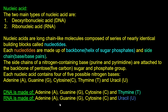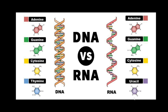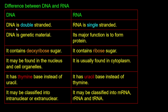This is the difference between DNA and RNA. DNA is double stranded; RNA is single stranded. DNA contains thymine; RNA contains uracil instead. DNA is genetic material.